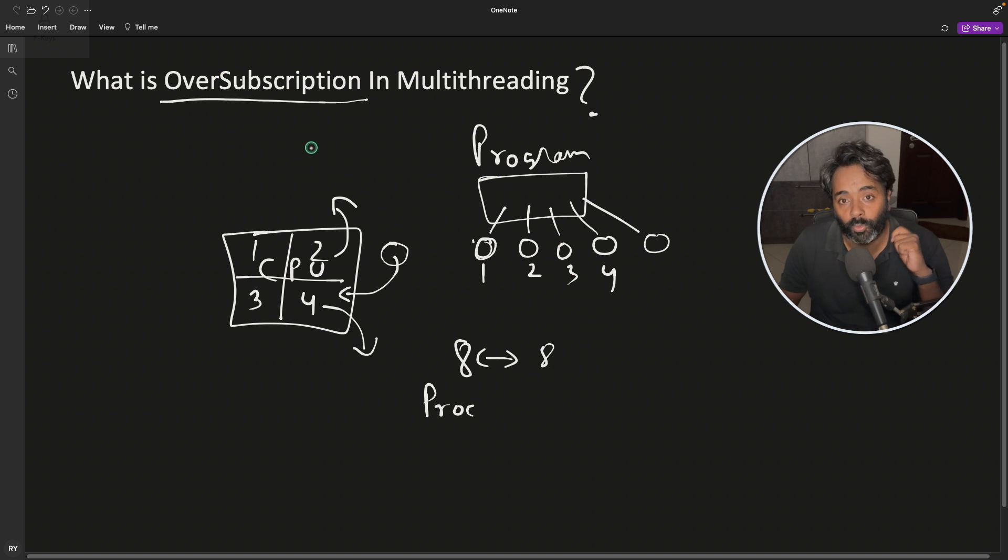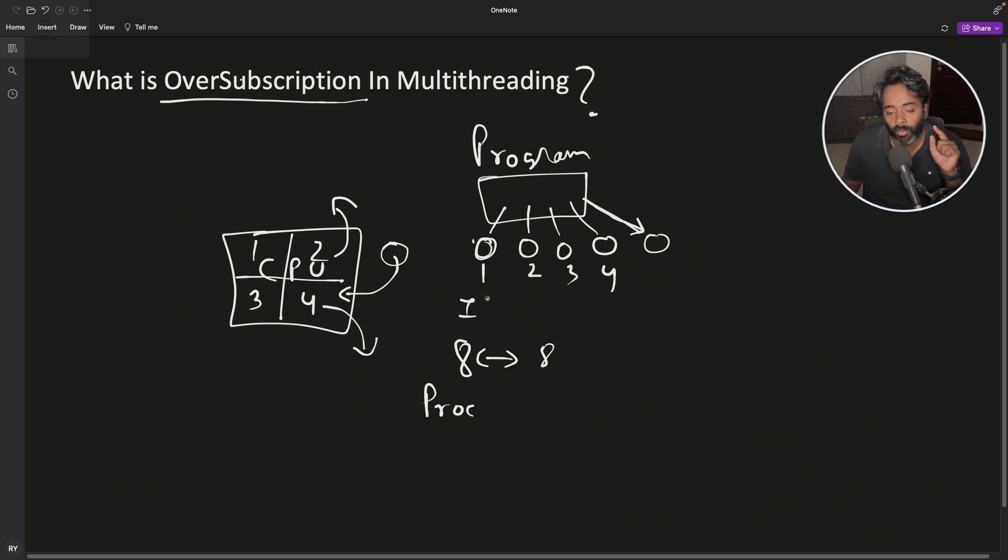So what is this oversubscription? This is the guy only. You willingly increase the number of threads, so even if you know that increasing this might decrease the performance, but you still do that because you know either of these threads at a moment is an I/O thread or a blocker thread.